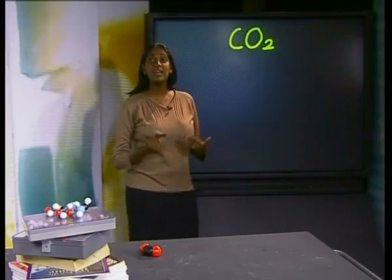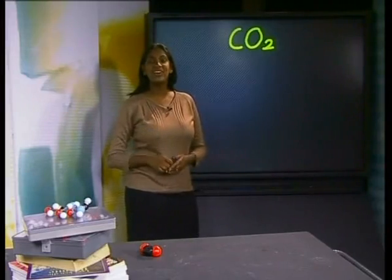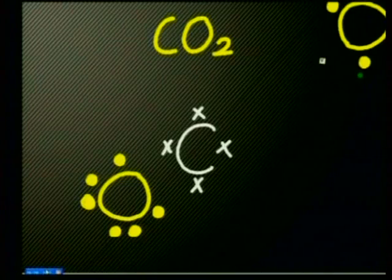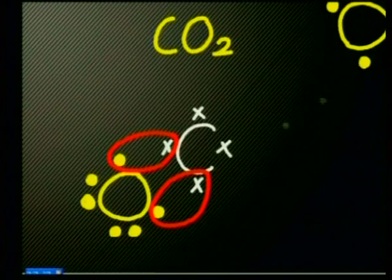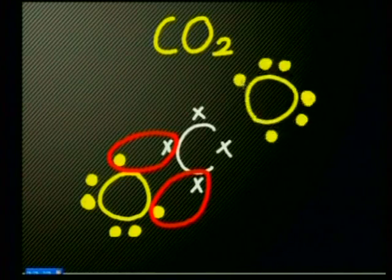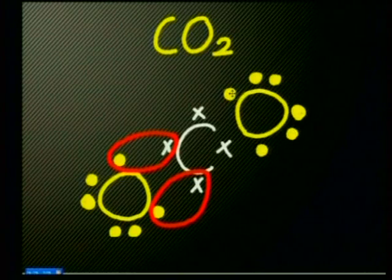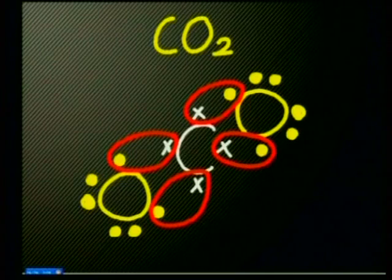Let's check this by looking at the Lewis structures of carbon and oxygen. Notice, carbon has four unpaired electrons, and oxygen has two unpaired electrons. So one oxygen atom can share two electrons with the carbon atom to form a double bond. But the carbon still needs to share two more electrons to become stable. This means a second oxygen atom needs to form another set of double bonds with the carbon atom.